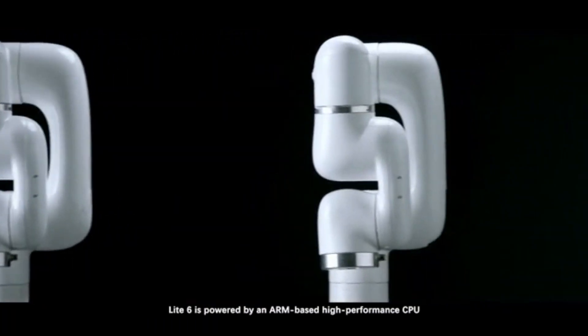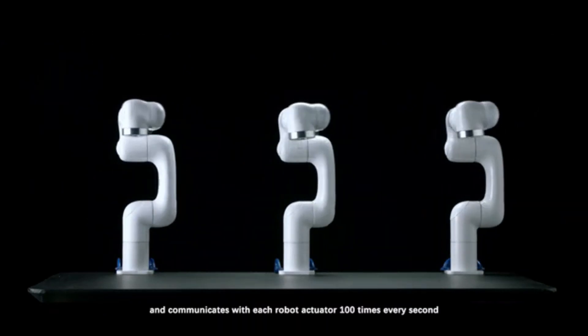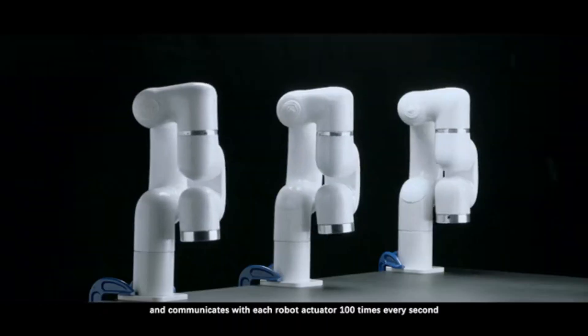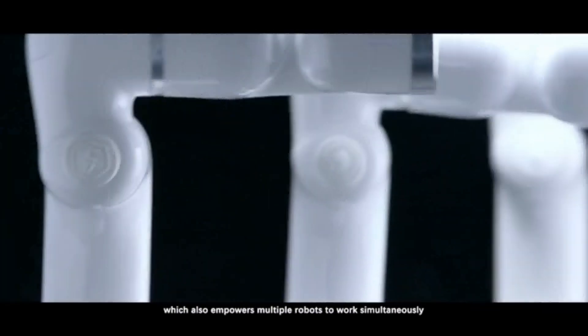Light 6 is powered by an ARM-based high-performance CPU and communicates with each robot actuator 100 times every second, which also empowers multiple robots to work simultaneously.